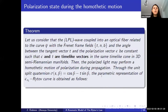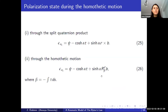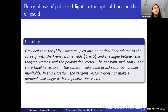We can now give some theorems related to the geometric phase equations. Consider a linearly polarized light wave coupled into an optical fiber related to curve PC with Frenet frame fields T, N, and B, where the angle between tangent vector T and polarized vector E is constant such that E and T are time-like vectors in the same time cone. Then the polarized light may perform a homothetic motion of polarization during propagation. Using the unit split quaternion sigma and the split quaternion product, we obtain equations 25 and the parametric form of the E1-Rytov curve in equation 26, where angle beta equals minus the integral of torsion. We can also give a corollary.